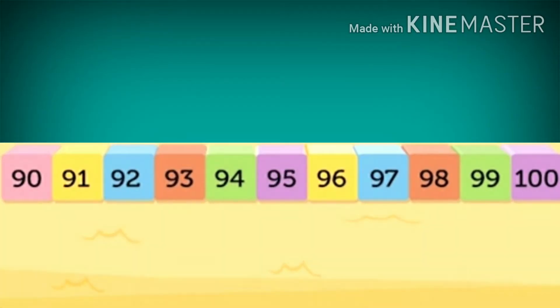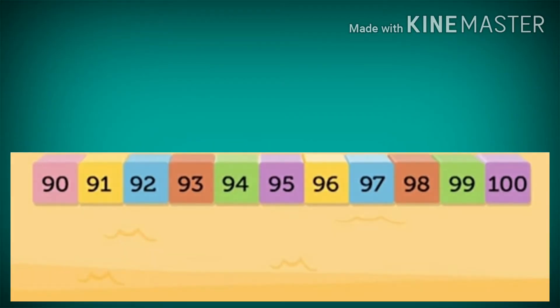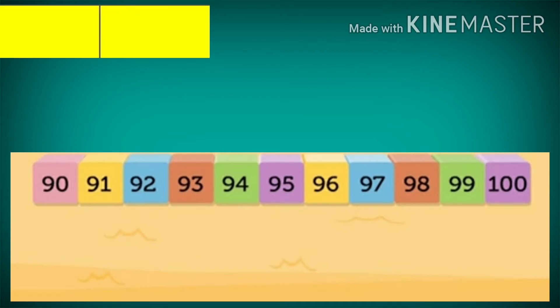See here, you see the number line. The numbers from 90 to 100 are shown on that number line. Now, find the number before the given number.